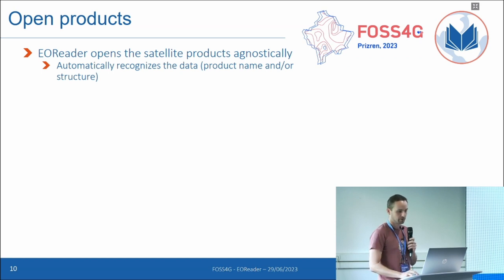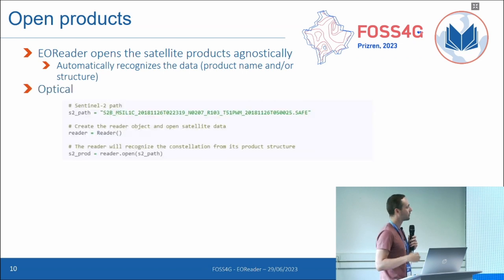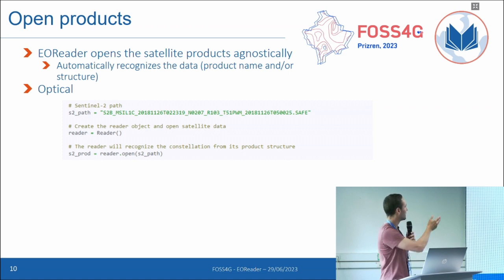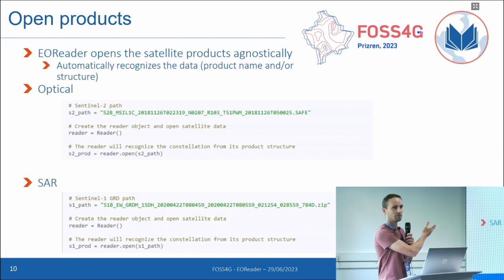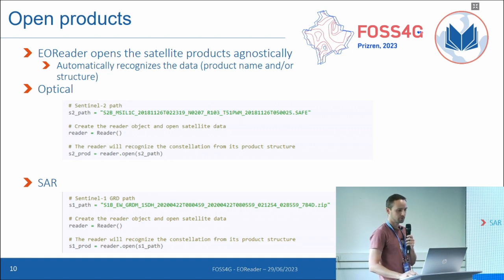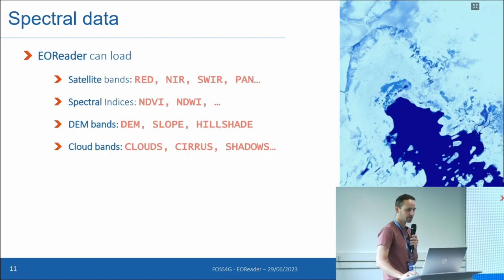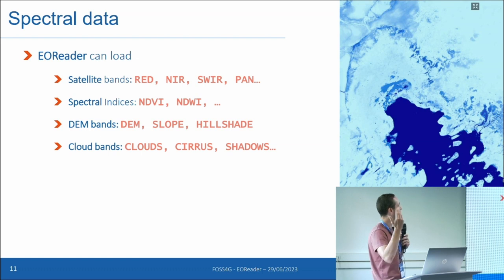The first step of EOReader is to open the product. EOReader automatically recognizes the data it is dealing with and opens the data agnostically. It means that if you give a path like a Sentinel-2 and declare the EOReader product, you will have a product opened from this path — a Sentinel-2 product. But if you give a Sentinel-1 path with the same line of code, it will open a Sentinel-1 product.